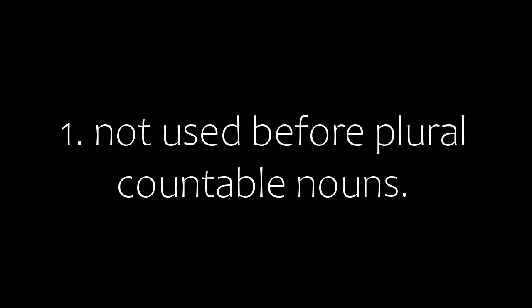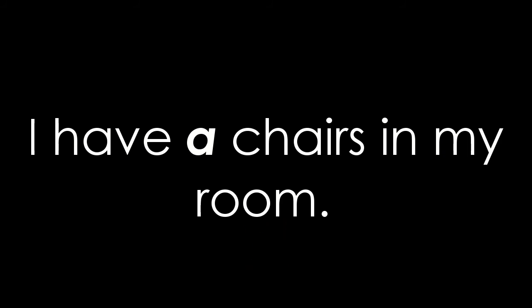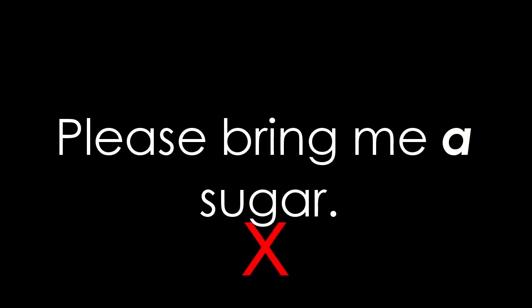Now we shall see when not to use 'A' and 'AN'. First, we do not use them before countable nouns in their plural forms. For example, 'I have chairs in my room' — we do not say 'a chairs.' We also do not use 'A' or 'AN' before uncountable nouns, because 'A' and 'AN' mean one. For example, 'Please bring me some sugar' — we do not say 'a sugar' because sugar is an uncountable noun.